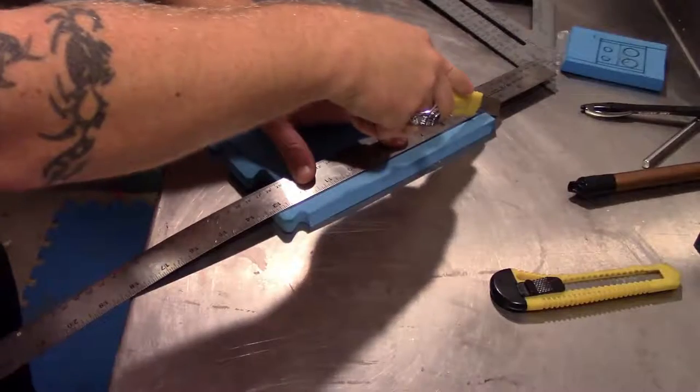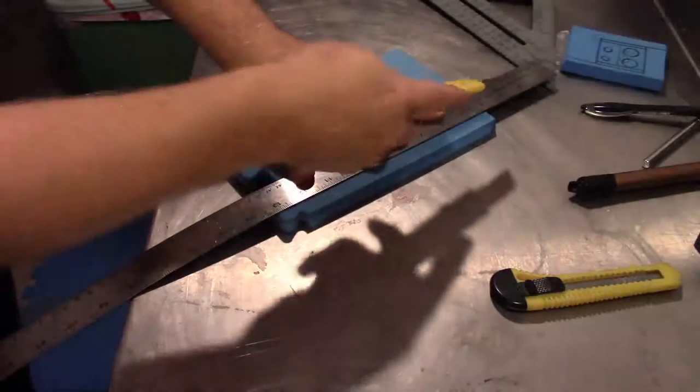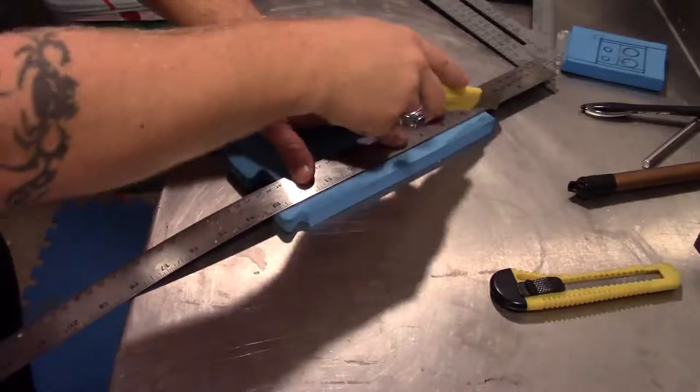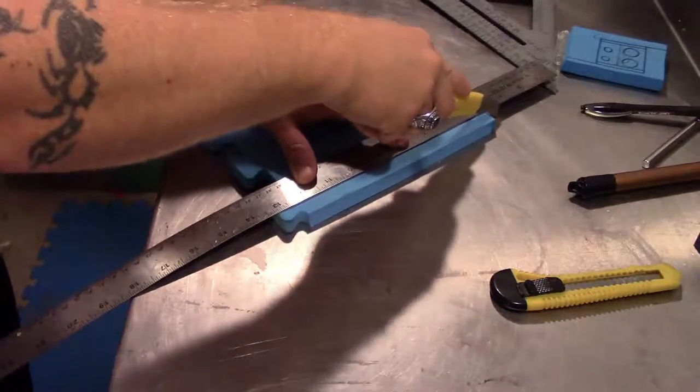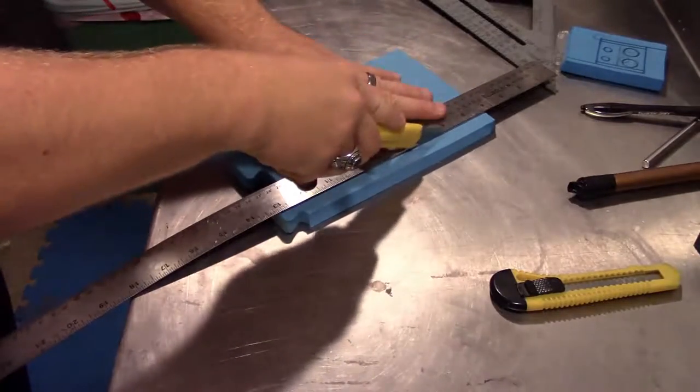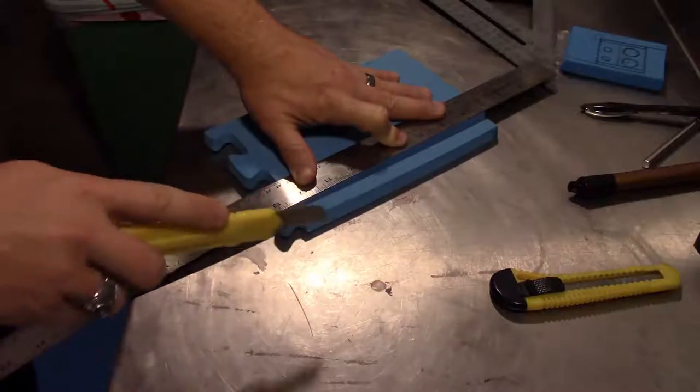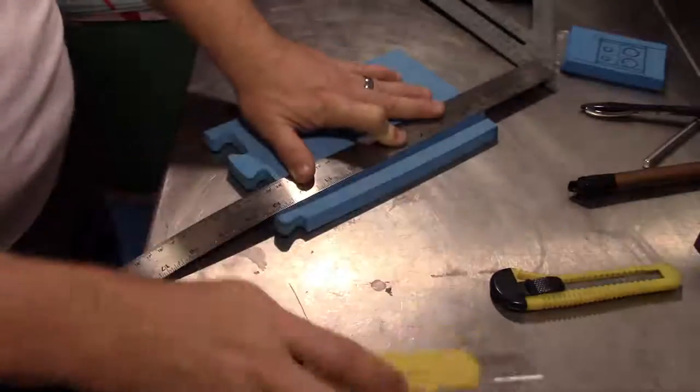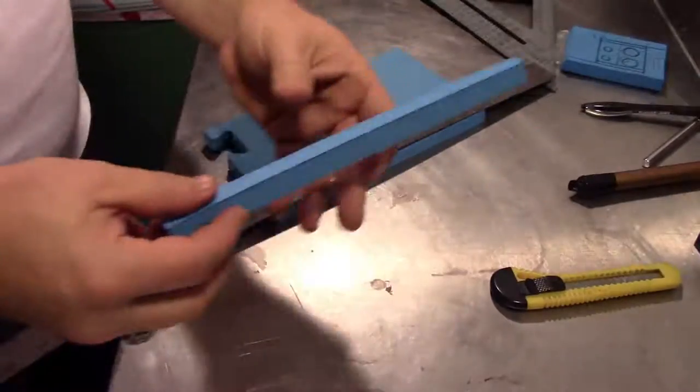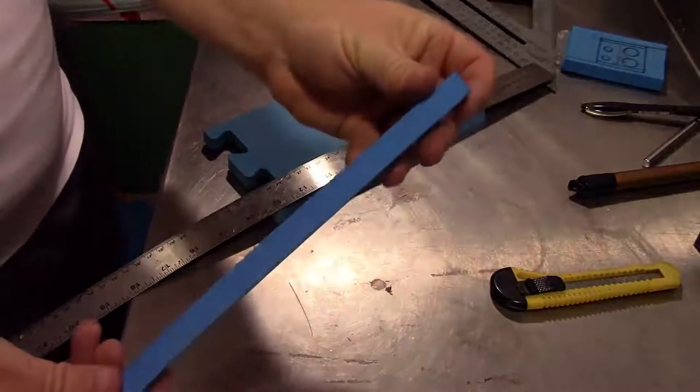You want to stay perpendicular if you're looking for a good straight 90 degree cut. Of course you can do different angles, but we just want to go straight. Straight, consistent pressure, and consistent pulling. You don't have to go zoom. And then you have a nice clean cut piece.